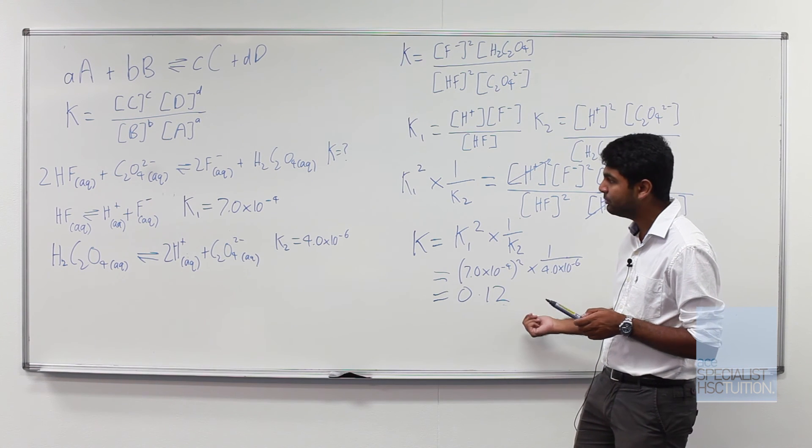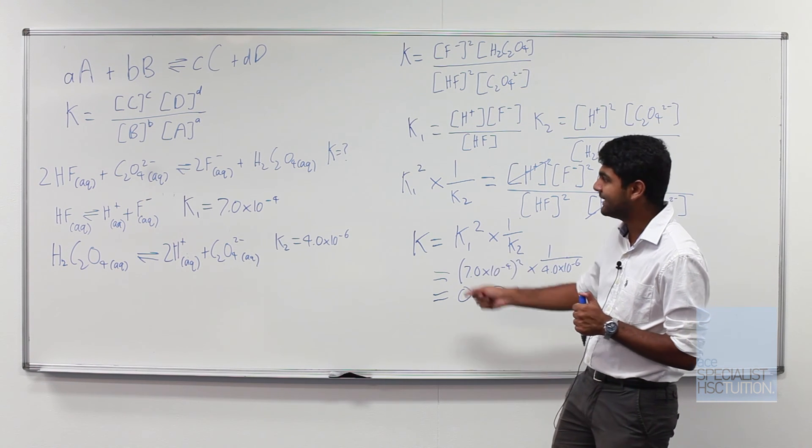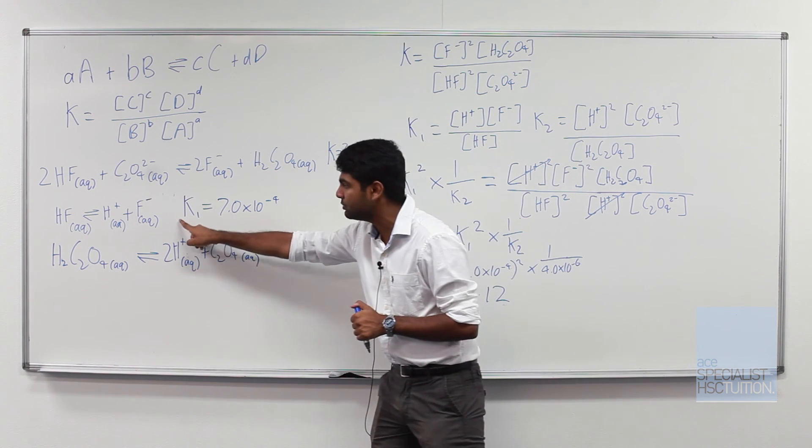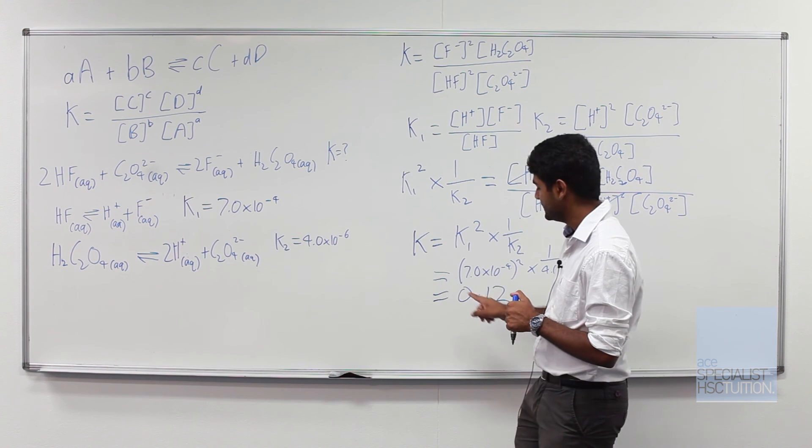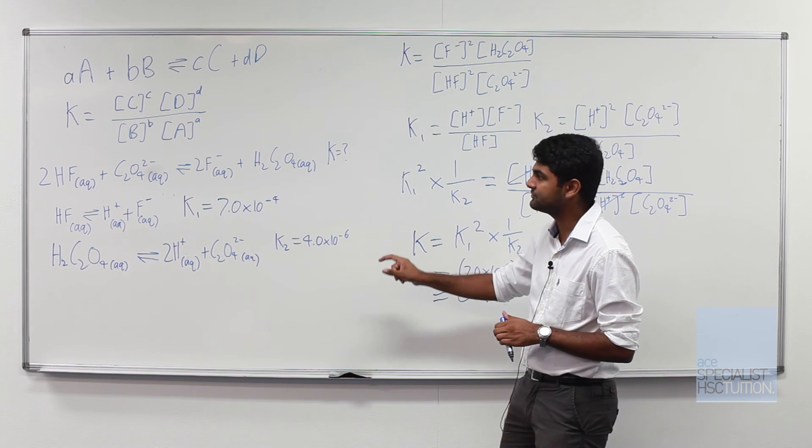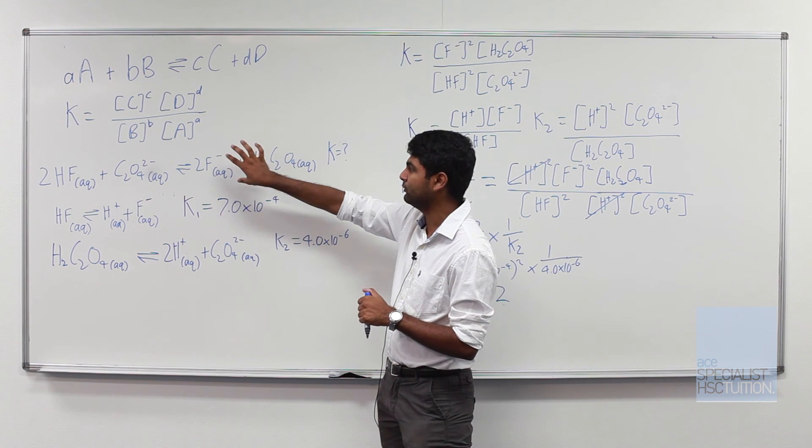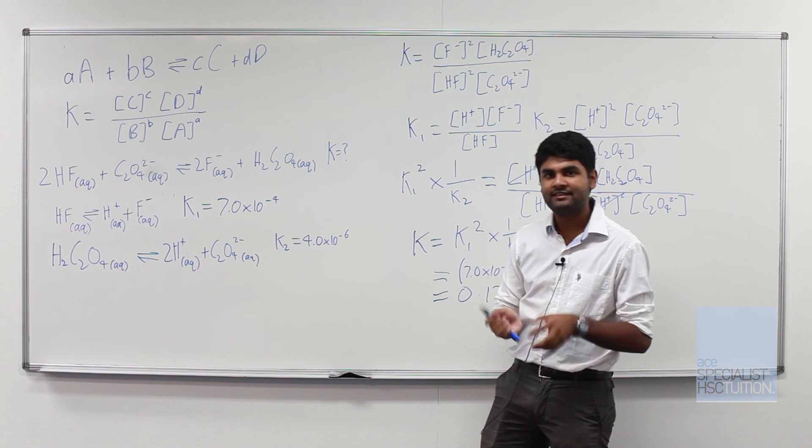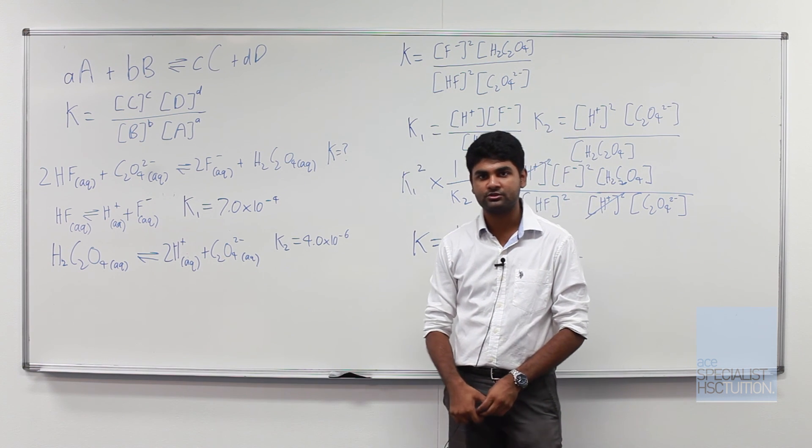Now this value of 0.12 means that this equilibrium expression lies more to the right than both this one and this one because 0.12 is greater than both K1 and K2. As a result, more products are formed from this reaction than both of these reactions and that is what is really important about the equilibrium constant.